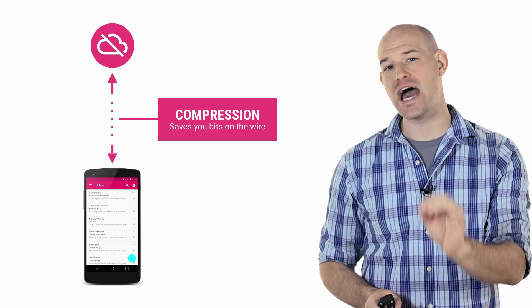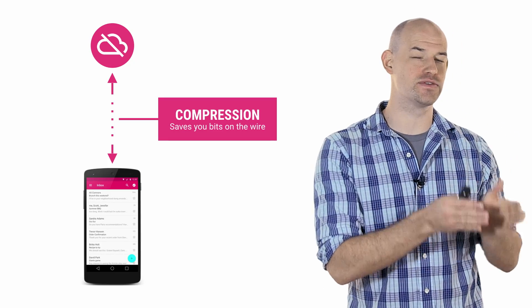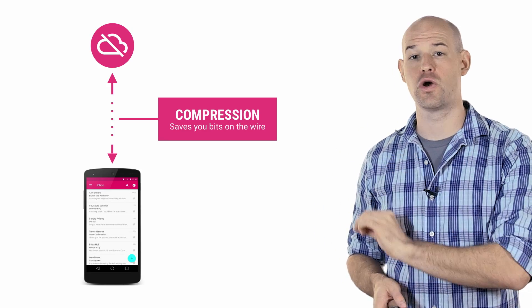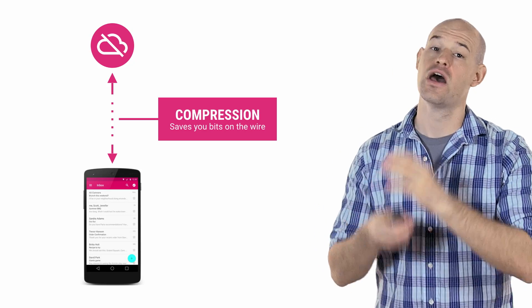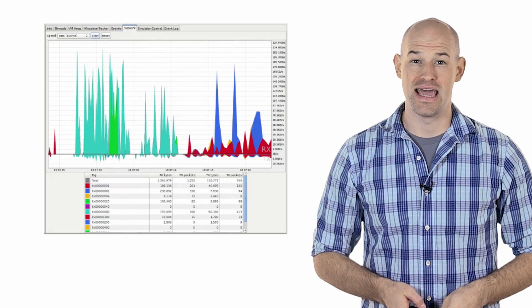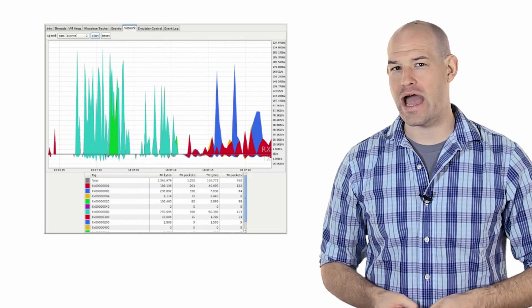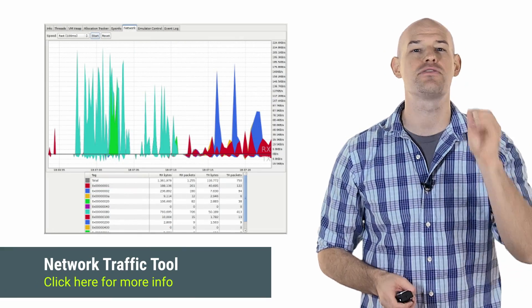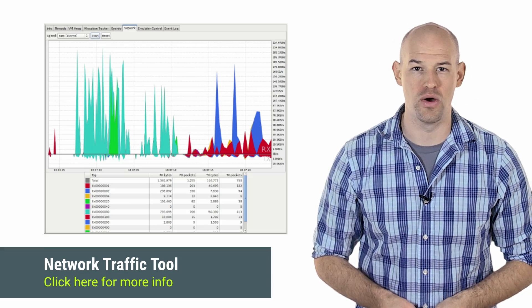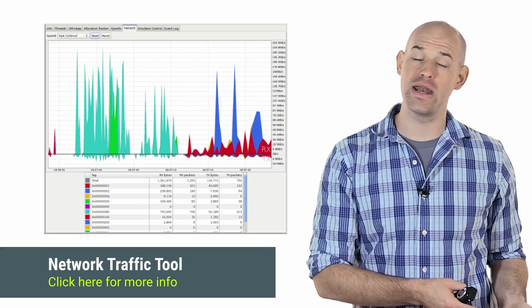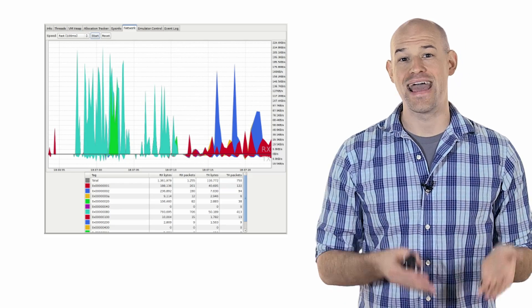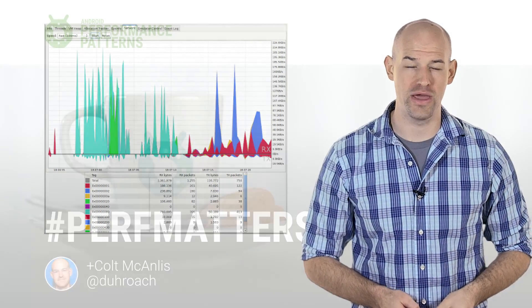Second, make sure you're highly compressing any content you have control over uploading or downloading. In general, the battery cost of the CPU cycles needed to compress or decompress content is often much lower than the overhead of what the radio would use to transfer that payload across the network. And if you're ever wondering how your app is using its networking resources, check out the networking profiling tool inside Android Studio, which gives you a broad overview of when networking requests occur, how long they occur, and how much data they transfer.